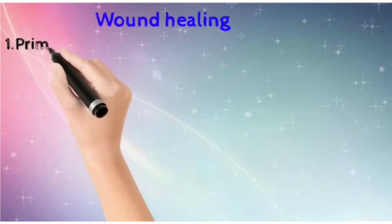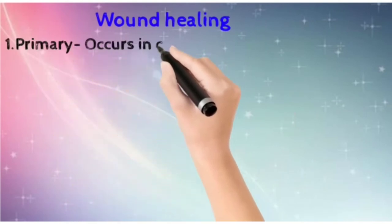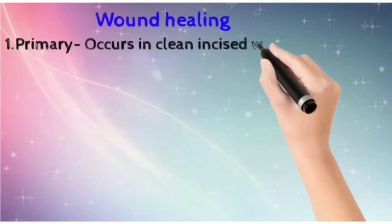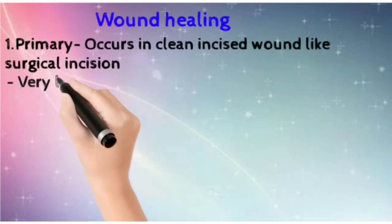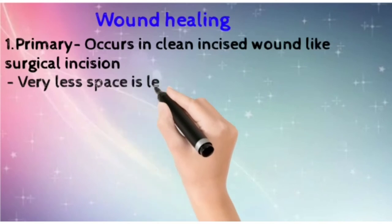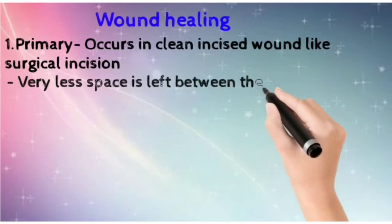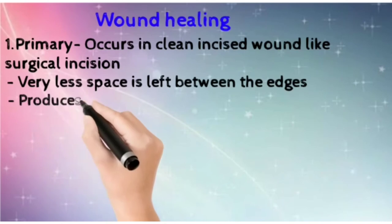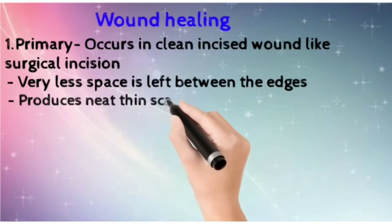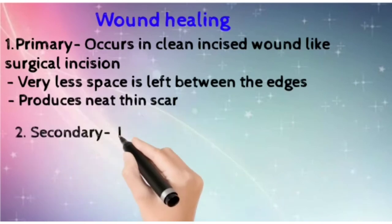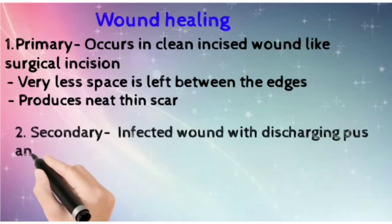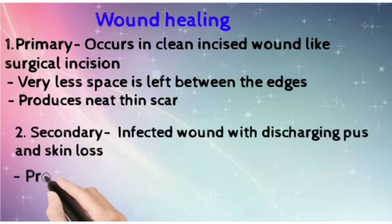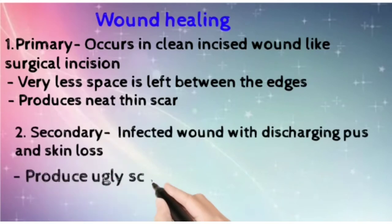There are two ways of wound healing: primary healing and secondary healing. In primary healing, there is a clean incised wound like a surgical incision. Very little space is left between the edges and it produces a thin scar. Secondary healing occurs in infected wounds and in this the scar is very ugly.